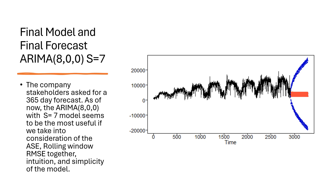We decided to go with the ARIMA(8) model with S equals 7. This would help stakeholders who want 365-day forecasts. We thought this would be useful because the ASE and rolling window RMSEs were reasonable, and this model is relatively simple in that it doesn't depend on other explanatory variables that could introduce additional variance. We think this is a superior and practical model, and we will stick with this one.